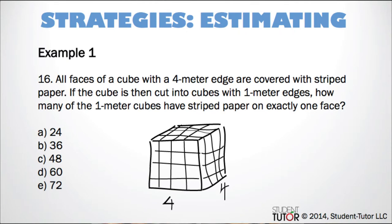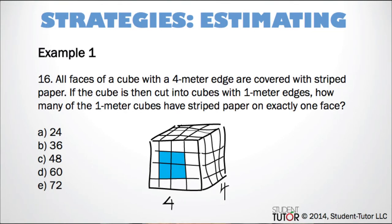So that'll look something like this. And according to the problem, we want to figure out how many of these little itty-bitty cubes have striped paper on exactly one side. But if you're looking at this side, only these four cubes in the middle fit that description, right?